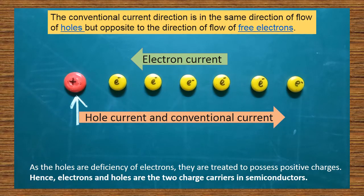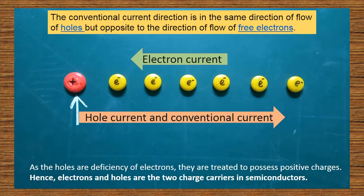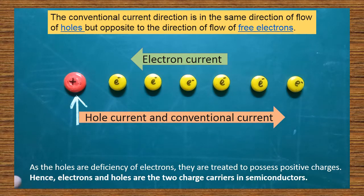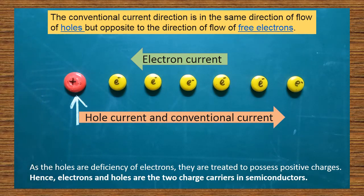Now we are going to learn what is the meaning of hole current and electron current in the case of semiconductors. You may have learnt about the formation of holes and formation of free electrons in semiconductors. Holes are the majority charge carrier in the case of P-type semiconductors and electrons are the majority charge carrier in the case of N-type semiconductors. After doping you will get both holes as well as electrons. Now we are going to see how the hole moves and how the electron moves within extrinsic semiconductors.